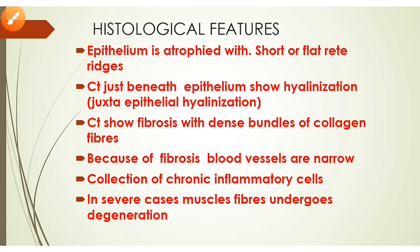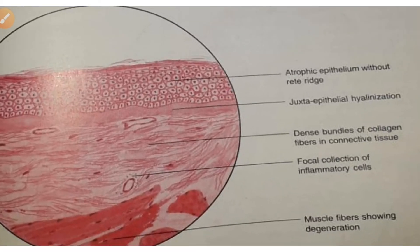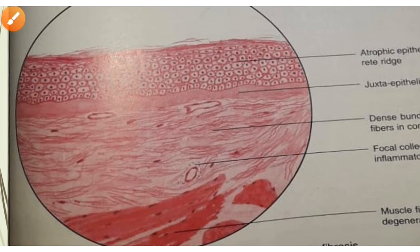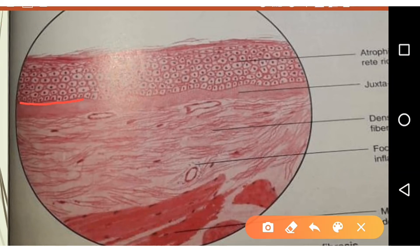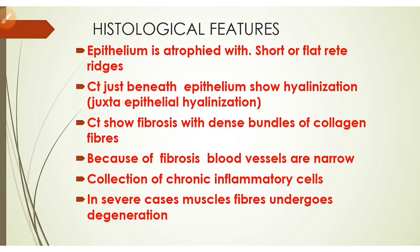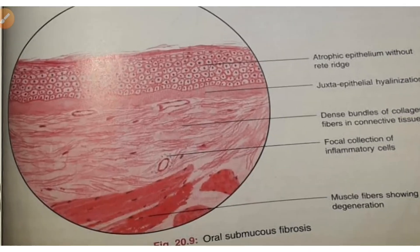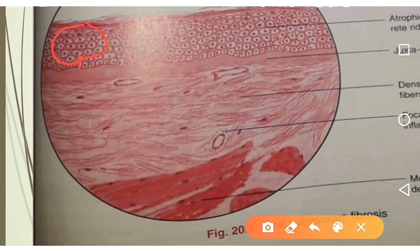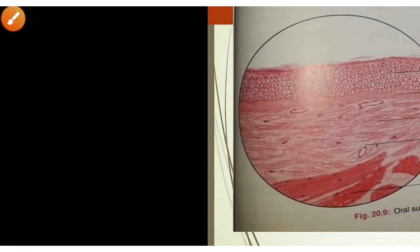Regarding the histological features of OSMF, the epithelium is atrophied with short or flat rete ridges — they become flat or are lost rather than showing the typical up-and-down pattern. Just beneath the epithelium, the connective tissue undergoes hyalinization, called juxta-epithelial hyalinization. This layer becomes clear and transparent, undergoing the process of hyalinization.